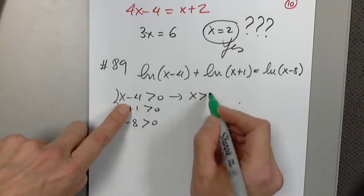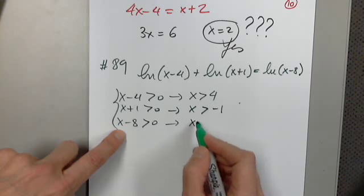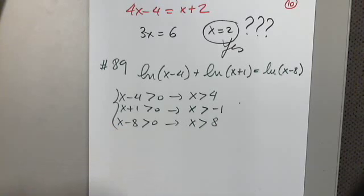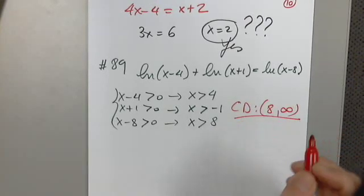Very good. This one says greater than 4. This one says greater than negative 1. And this one says greater than 8. So greater than negative 1, greater than 4, greater than 8. Common domain, please. Very good. Indeed. 8 to infinity. Do you all agree?